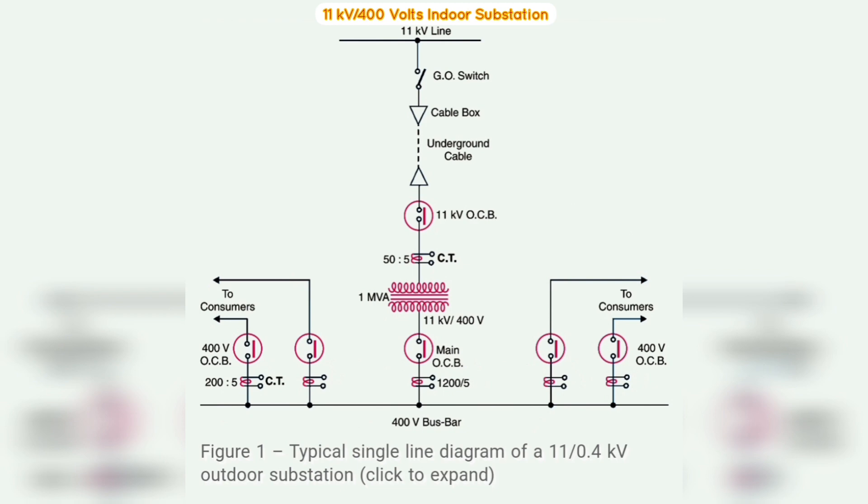The transformer steps down the voltage to 400 volts, three-phase, four-wire. Note: the secondary of the transformer supplies to the bus bars via the main circuit breaker. From the bus bars, 400 volt, three-phase, four-wire supply is given to the various consumers via 400 volt CBs.